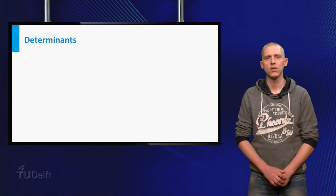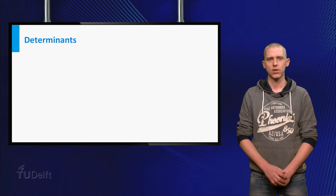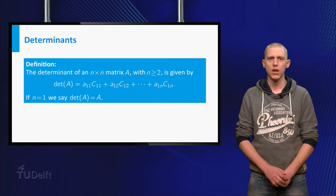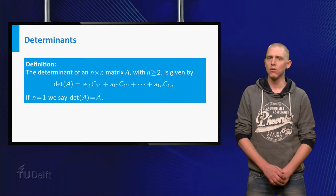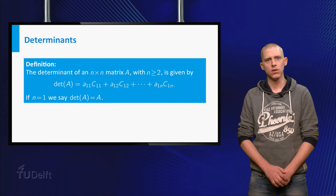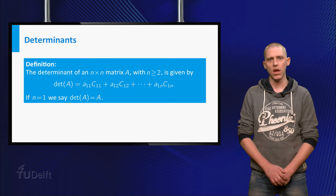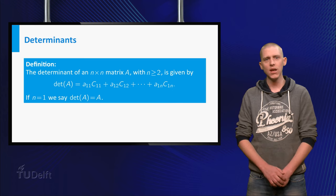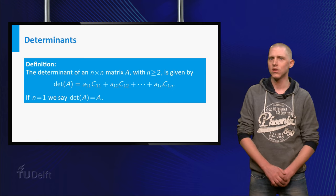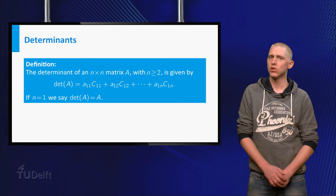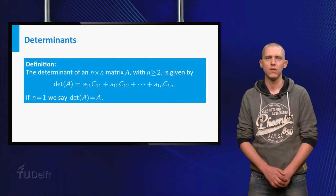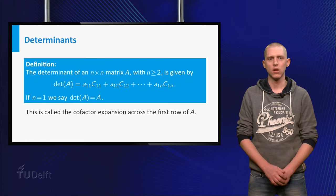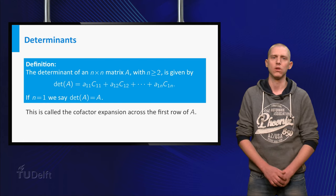Now you are ready to find the determinant of an n by n matrix. The determinant of an n by n matrix A, with n greater than or equal to 2, is given by the recursive formula the determinant of A equals a11 times c11 plus a12 times c12 and so on until a1n times c1n. The determinant of a single value is the value itself. We call this way of calculating the cofactor expansion across the first row of A.